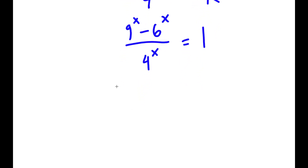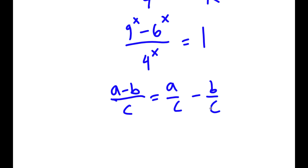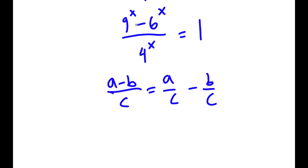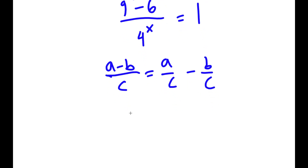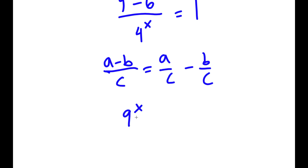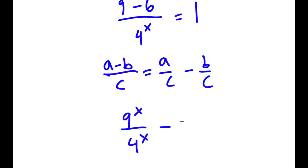Now, if I have something in the form (a minus b) over c, this can be written as a over c minus b over c. So 9 to the power of x minus 6 to the power of x, all over 4 to the power of x, can be rewritten as 9 to the power of x over 4 to the power of x, minus 6 to the power of x over 4 to the power of x. This is equal to 1.